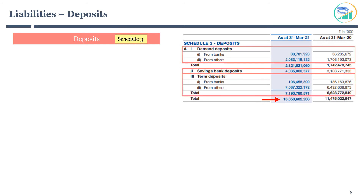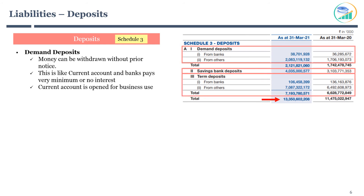Let's start with demand deposits. In this type of account, money can be withdrawn without prior notice. This is like a current account, and the bank pays very minimal or no interest. Current accounts are generally opened for business use.